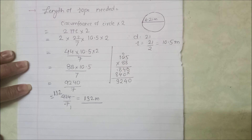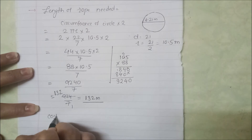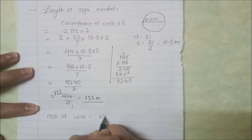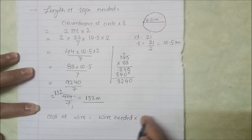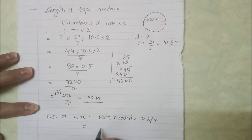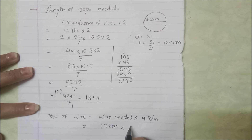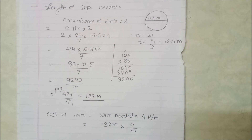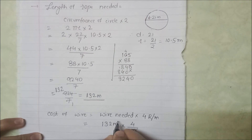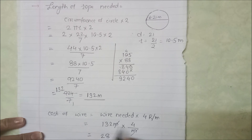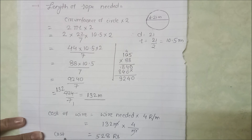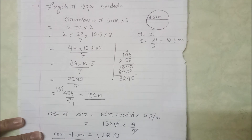Cost of wire = wire needed × rate। Wire 4 rupees per meter है और 132 meter rope चाहिए। तो 132 × 4 करते हैं: 2×4=8, 3×4=12 carry 1, 1×4=4+1=5 → 528 rupees। Cost of wire = ₹528।